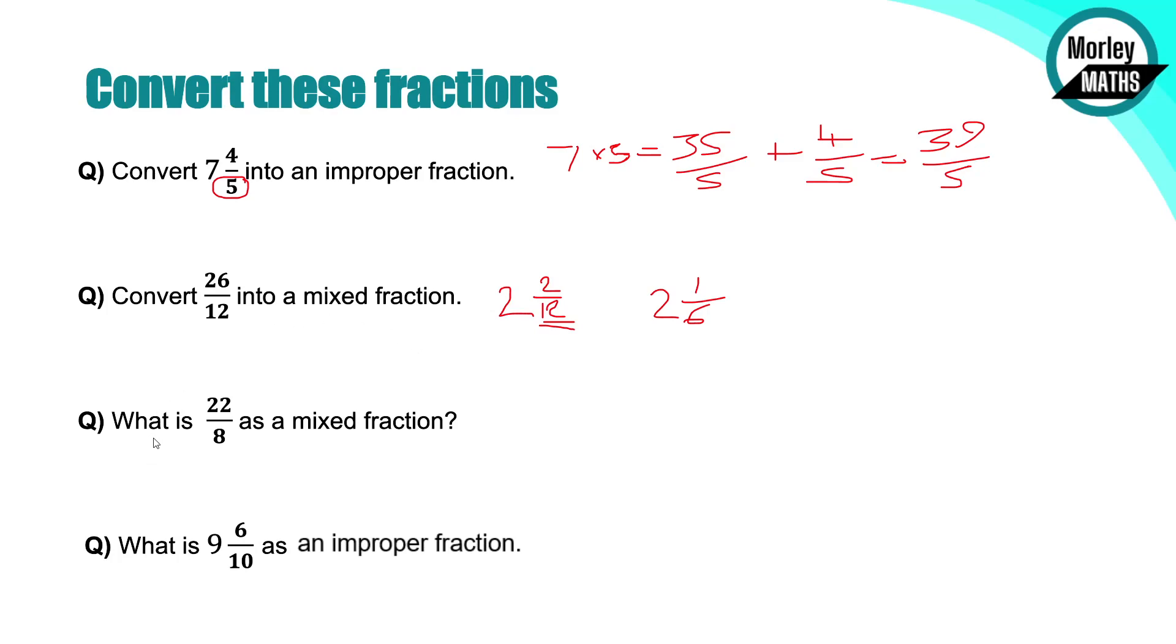If we want to look at the next question, we've got 22 eighths. We want to express that as a mixed fraction. So how many eighths are in 22? 8, 16, 24. So 8, 16, we've got two. There's not quite enough for 24 for that third one. So if we take 16 off of 22, what do we have left? We've got six. So 6 eighths. Now we can simplify that fraction. If we divide that by two, that'll turn it into three quarters. So we've simplified the fractional bit. The answer to that question is two and three quarters.